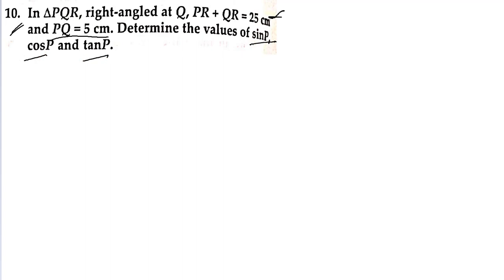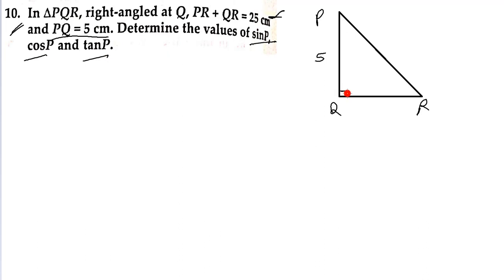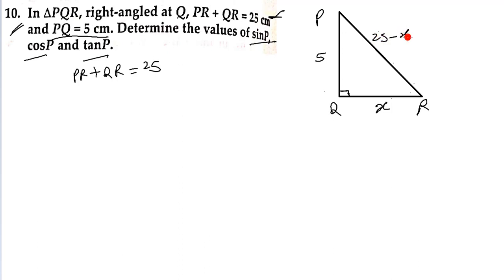First we have a right-angle triangle, so the right angle is here. PQ value is 5 cm. Now let's see what has been given — PR plus QR is equal to 25. This addition of two sides is 25. We will find out the values of sin, cos and tan.